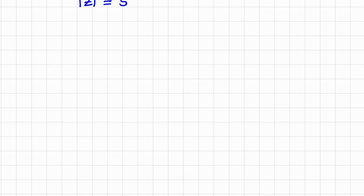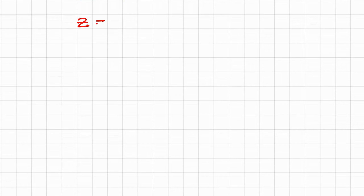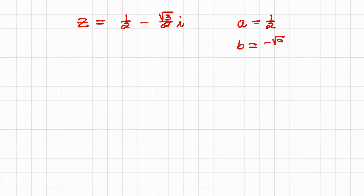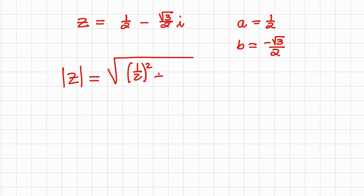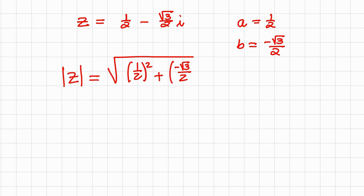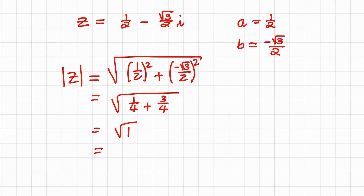Let's look at another example. Let us say z equals one half minus the square root of 3 over 2 times i. The a value equals one half, and the b value equals negative square root of 3 over 2. The modulus equals the square root of one half squared plus negative square root of 3 over 2 squared, which simplifies to the square root of one quarter plus three quarters, giving the square root of 1, which equals 1.